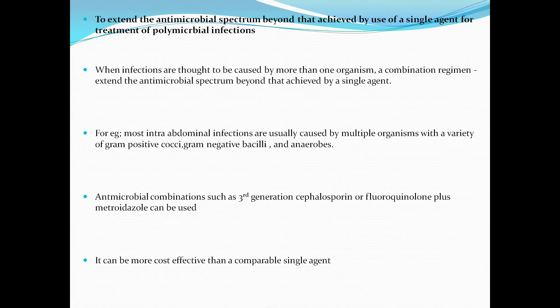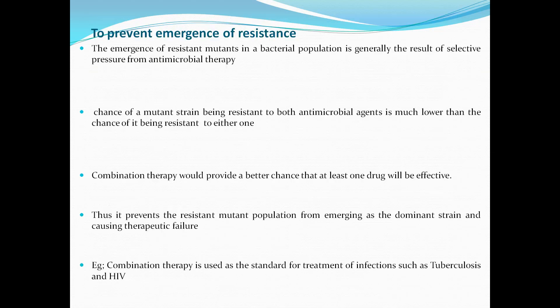Antimicrobial combinations such as a third generation cephalosporin or a fluoroquinolone plus metronidazole can be used and may be more cost-effective than a single agent. To prevent emergence of resistance: the emergence of resistant mutants in a bacterial population is generally the result of selective pressure from antimicrobial therapy. The chance of a mutant strain being resistant to both antimicrobial agents is much lower than being resistant to just one; therefore, combination therapy is better. Combination therapy is also standard for treatment of infections such as tuberculosis and HIV, and can prevent the emergence of resistant mutant populations.